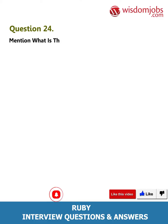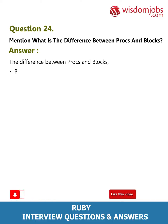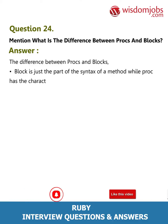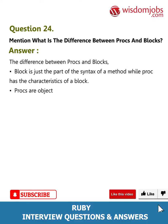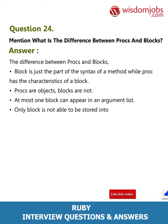Question 24: Mention what is the difference between procs and blocks. Answer: A block is just part of the syntax of a method, while a proc has the characteristics of a block. Procs are objects; blocks are not. At most one block can appear in an argument list. A block cannot be stored into a variable, while a proc can.